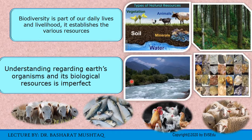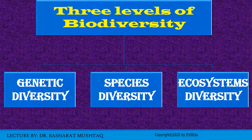Here is an example of various resources which biodiversity provides us at different places and different ecosystems. My dear friends, biodiversity is generally described in terms of its three fundamental, hierarchically related levels of biological organization. These three levels of biodiversity are genetic diversity, species diversity, and ecosystem diversity.